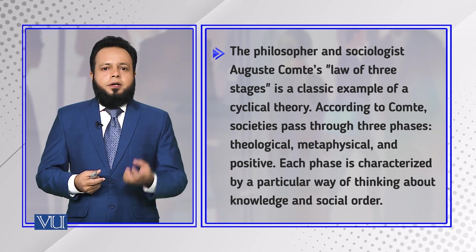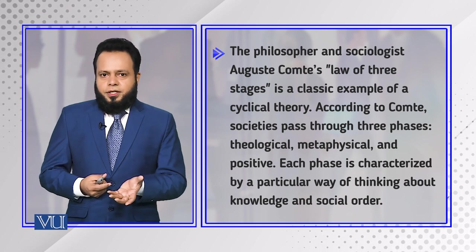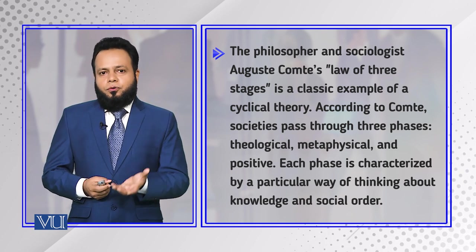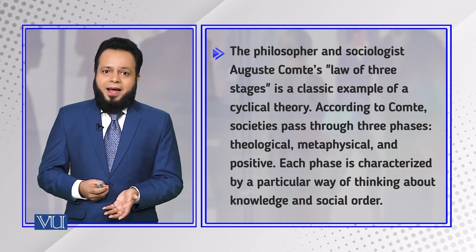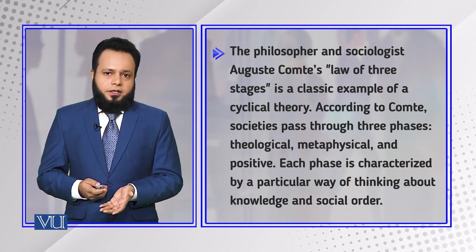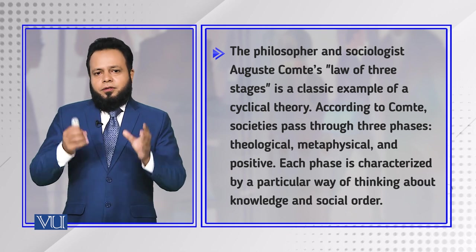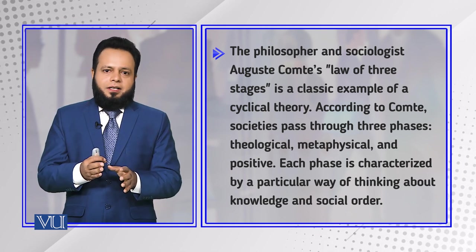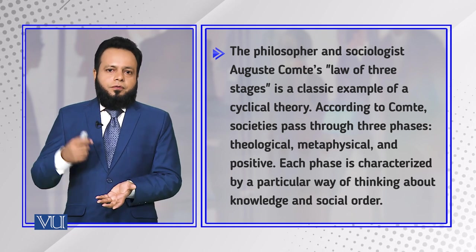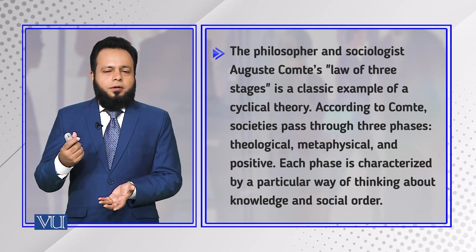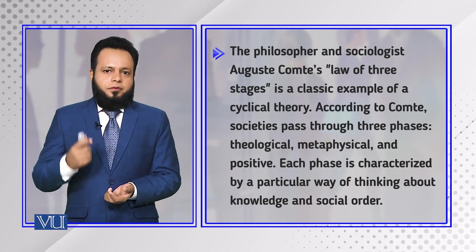At the positive stage, which is called the scientific stage, Auguste Comte would consider social change being understood more rationally, more logically, and more scientifically. He saw that science can help us understand these different changes not only within societies but also within our larger environment.